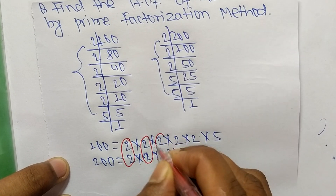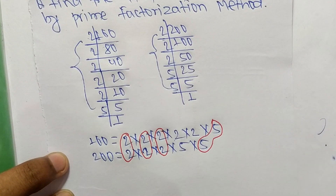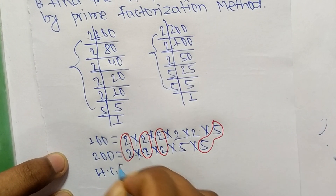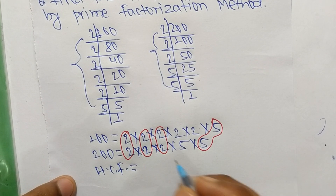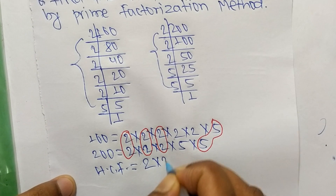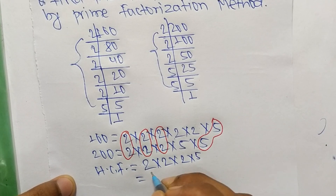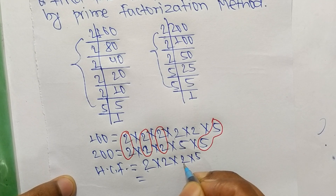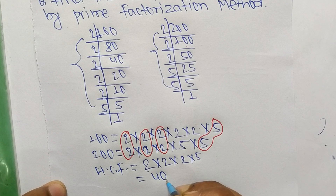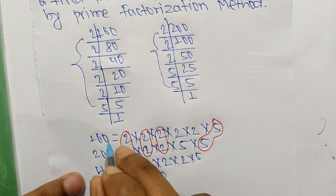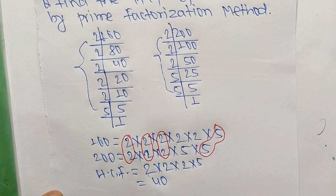The HCF is equal to the product of the common factors. The common factors we have are 2, 2, 2, and 5. So it is 2 times 2 equals 4, 4 times 2 equals 8, and 8 times 5 equals 40. So 40 is the HCF of 160 and 200. That's all for today — thanks for watching.